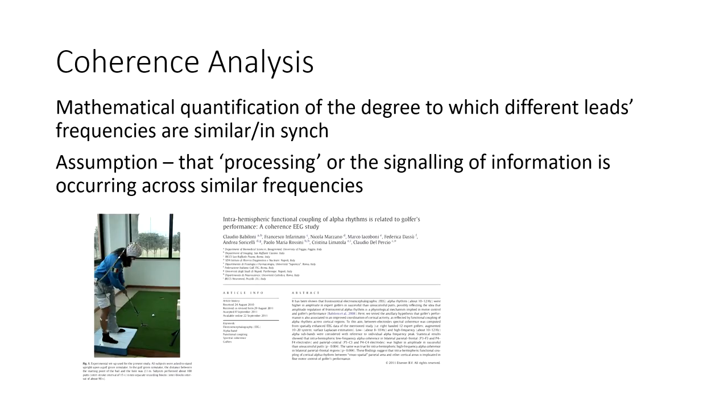Coherence analysis is another fascinating statistical area where you're trying to work out the degree to which frequencies coming out of different leads and different parts of the brain are similar and are in synchrony. In this lovely study with the golfer, when there was greater synchronicity between the parts of the brain that do visuospatial processing and the parts of the brain that do the motor actions of actually doing the punt, when there were more in synchrony, the chances of having a successful putt were higher.